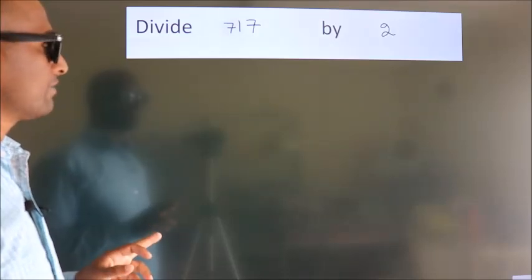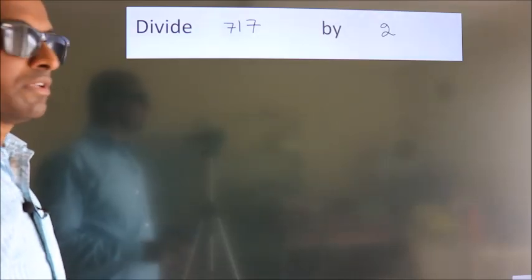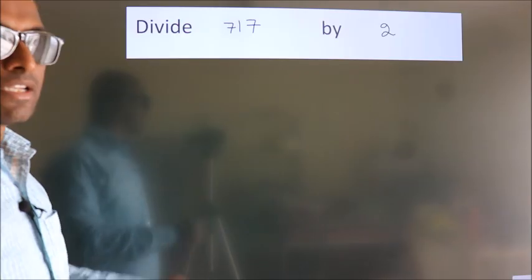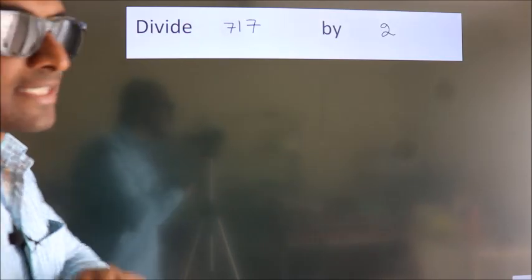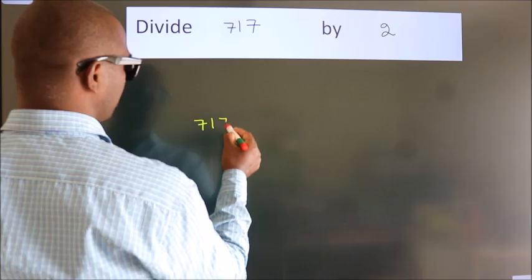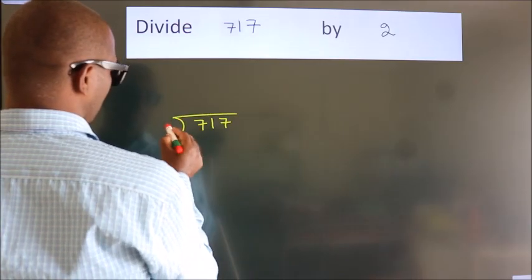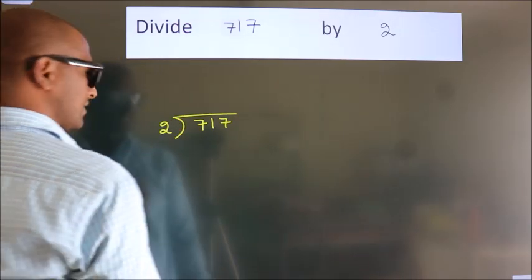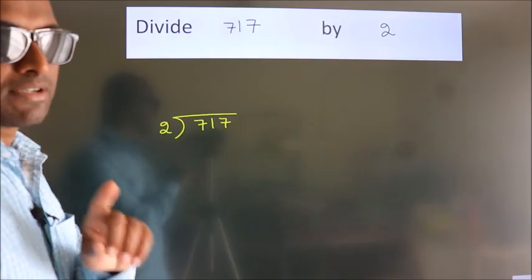Divide 717 by 2. To do this division, we should frame it in this way. 717 here, 2 here. This is your step 1.